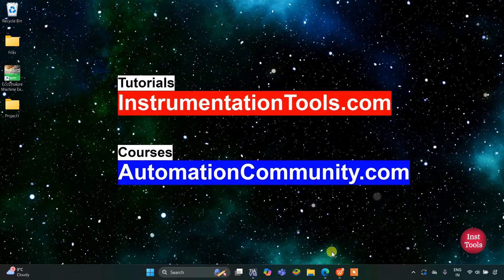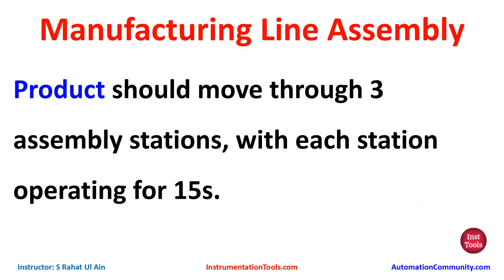Hello everyone, welcome to Automation Community. Today in this video we are going to discuss an example about a manufacturing line. The assembly product should move through three assembly stations, with each station operating for 15 seconds. There will be different sensors at different stations — three sensors total — and when a particular sensor gets activated, that means the product is at that station, and the machine at that station will operate for 15 seconds.